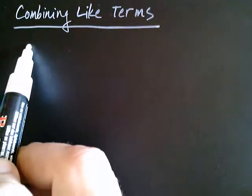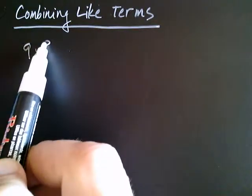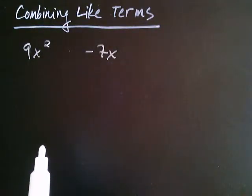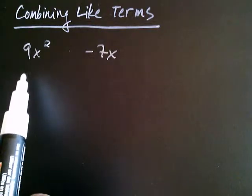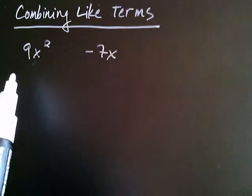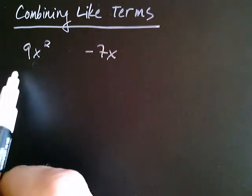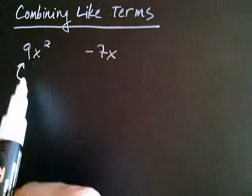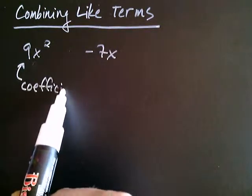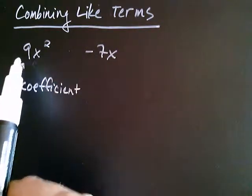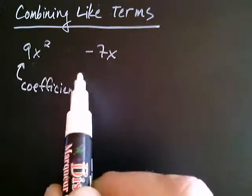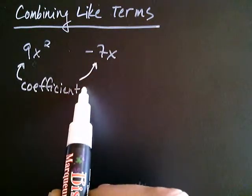Let's say that you had two terms — 9x squared and negative 7x. When you look at two terms, there is some terminology we want to be familiar with. The 9 is the numerical part of the term, and that's called the coefficient. So the coefficient is the numerical part of a term. Likewise, the coefficient of the second term would be the negative 7. So these are both examples of coefficients.